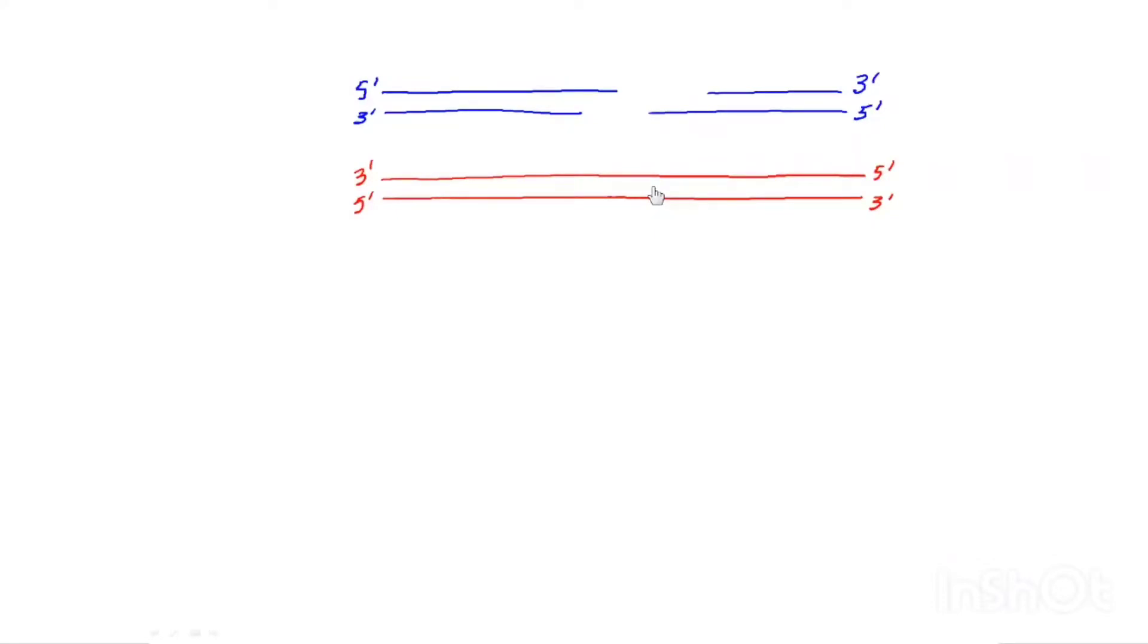So the homologous chromosome, which is drawn in red, has to be partially denatured. I'm going to draw it right here. So here's the 5' and 3' ends.